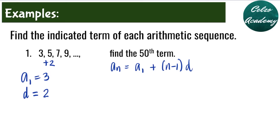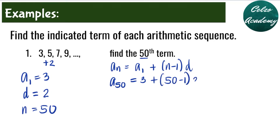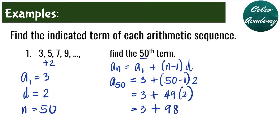The problem is asking for the 50th term, so n equals 50. We are solving for a sub 50. Our a sub 1 is 3, plus n minus 1 is 50 minus 1, times the common difference of 2. Simplifying: 3 plus 49 times 2 equals 3 plus 98, which equals 101. So the 50th term is 101.